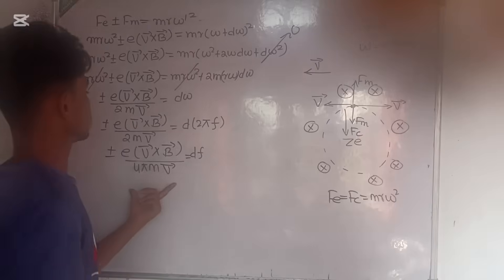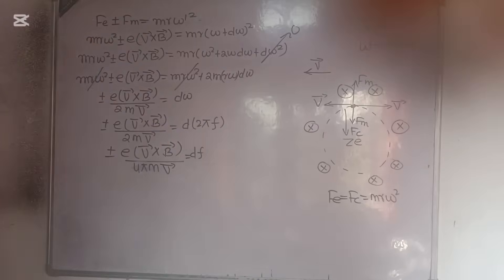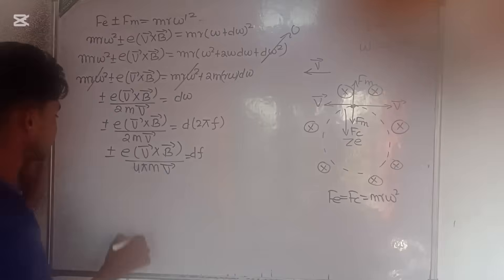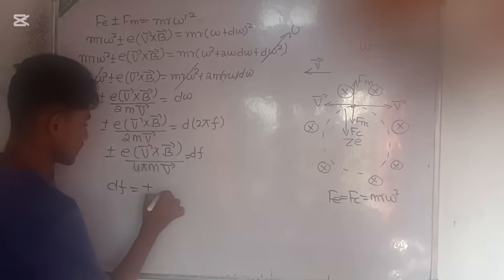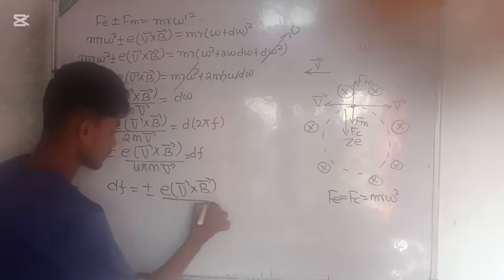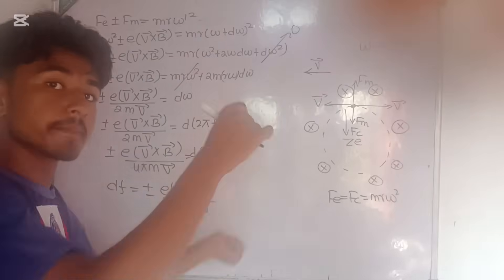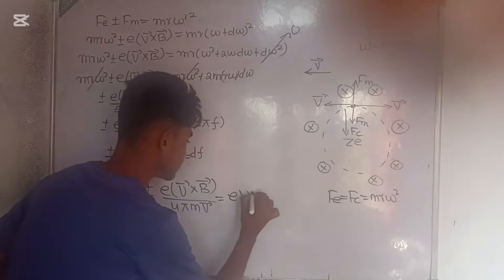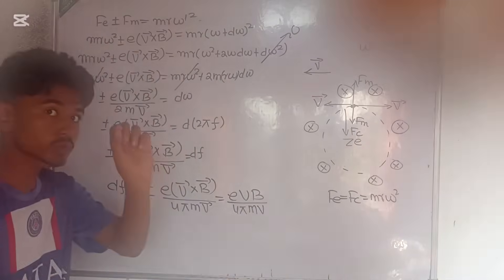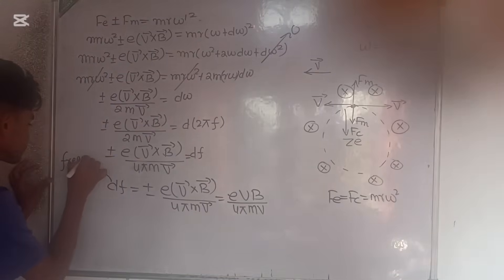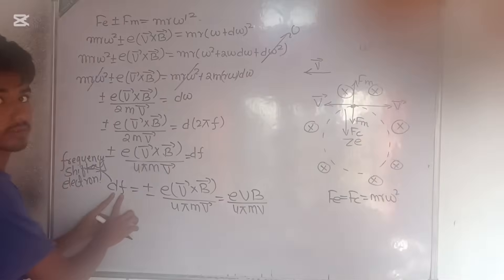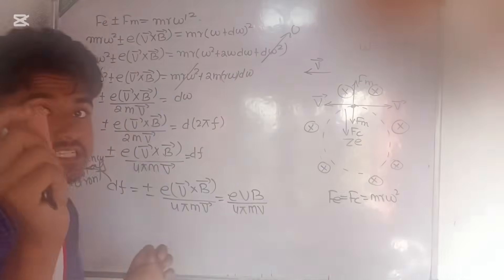I have watched many teachers on YouTube and they are doing something very wrong with the classical wavelength shift of the photon. They assume df = ±e(v cross B) / (4πmv), which is correct so far. But this is the frequency shift of the electron — not the frequency shift of the photon — because all this mathematics is being done for the electron.